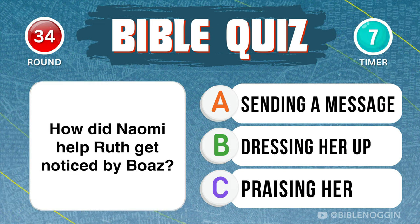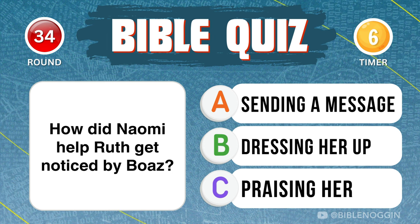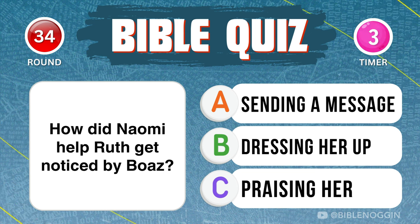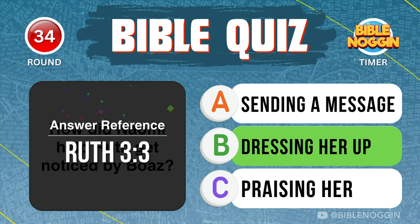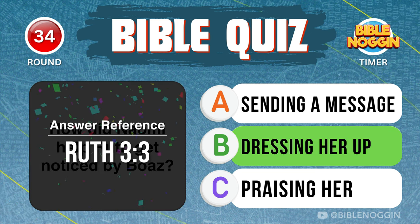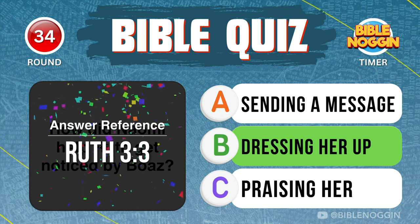Question 34: How did Naomi help Ruth get noticed by Boaz? By dressing her up — found in Ruth chapter 3, verse 3.